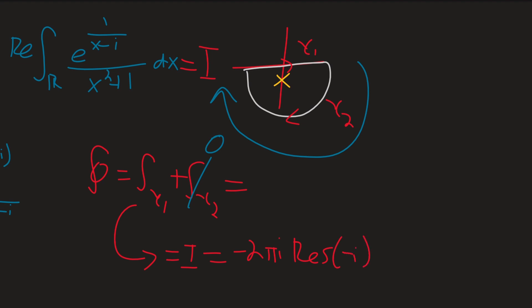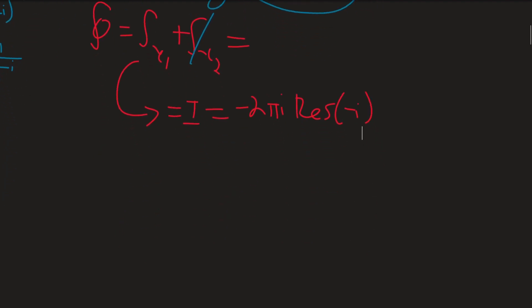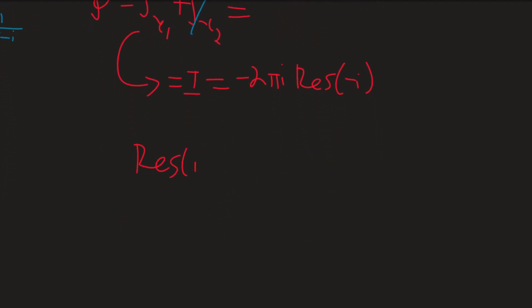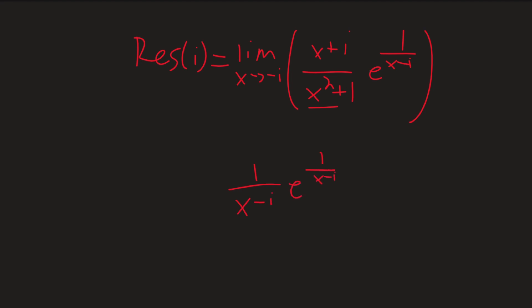So, with that out of the way, let's actually calculate this residue, shall we? The residue at i is going to be equal to, this is just by the residue theorem, the limit as x approaches negative i of (x+i) over (x²+1) times e to the 1/(x-i) right here. And this really is not a bad limit to evaluate at all. We're just going to cancel some stuff here. So, this just gives us 1/(x-i) times e to the 1/(x-i). And we still have the limit as x approaches negative i. And just plugging and chugging, this gives us 1/(-2i) times e to the 1/(-2i).